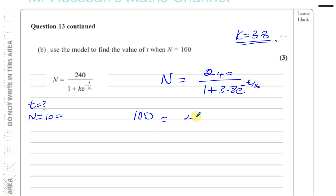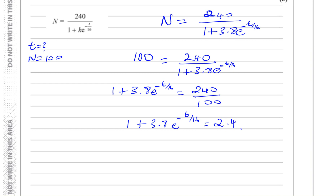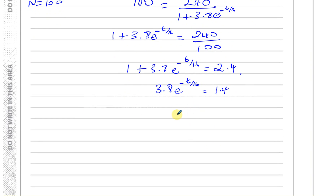We substitute N equals 100: 100 equals 240 divided by one plus 3.8 e to the power of minus t over 16. Cross-multiplying gives one plus 3.8 e to the power of minus t over 16 equals 240 divided by 100, which is 2.4. Subtracting one from each side: 3.8 e to the power of minus t over 16 equals 1.4. Dividing both sides by 3.8: e to the power of minus t over 16 equals 1.4 divided by 3.8.